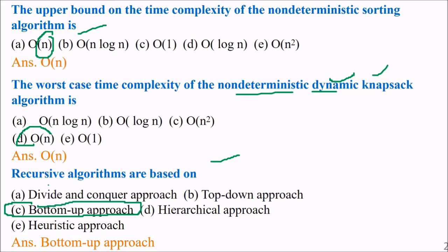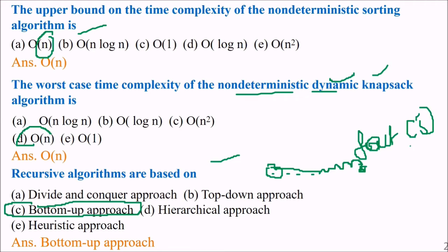In the bottom-up approach, we first go to the smallest sub-problem and then add them up until we reach the initial one. For example, to find the factorial of 5, we calculate down to 1 first, then build back up: 1, 2, 3, 4, and put the result into 5. This is how we do it.